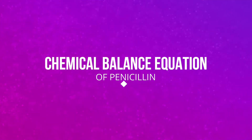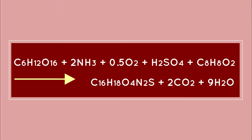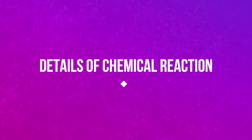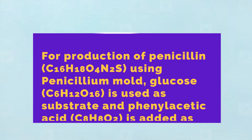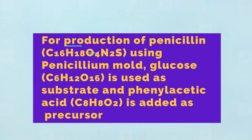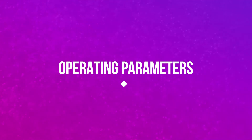Chemical balance equation of penicillin. Details of the chemical reaction for production of penicillin (C16H18O4N2S) using Penicillium mold. Glucose (C6H12O6) is used as substrate, and phenyl acetic acid (C8H8O2) is added as a precursor.